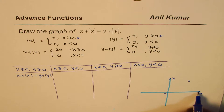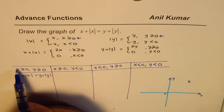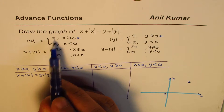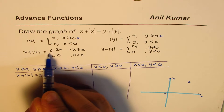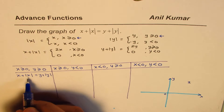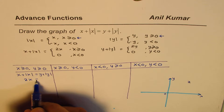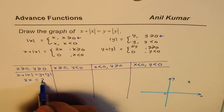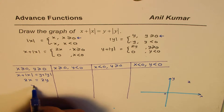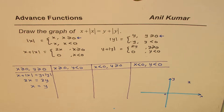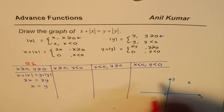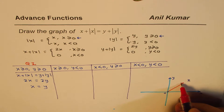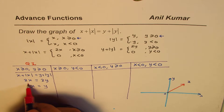If x is greater than or equal to 0, then x plus absolute x is 2x, so we replace the left side with 2x. The right side becomes 2y. Solving this, we get x equals y, which is a straight line. This line lies in quadrant 1.